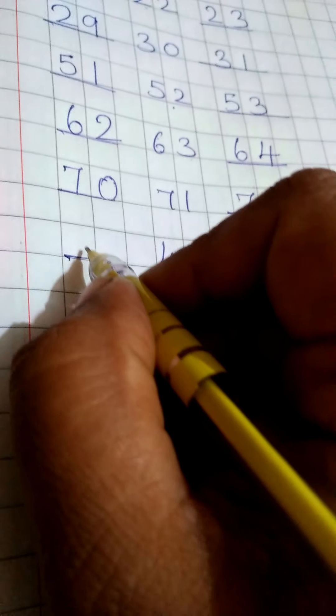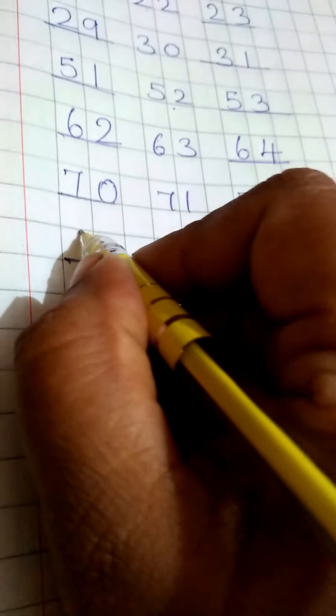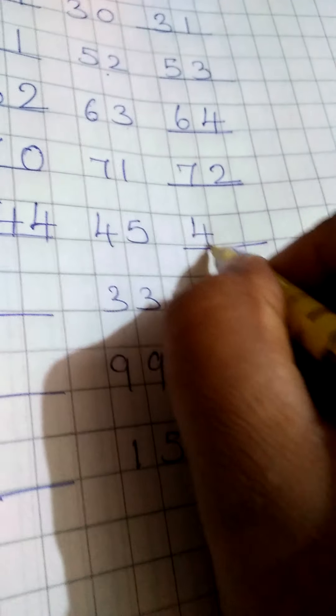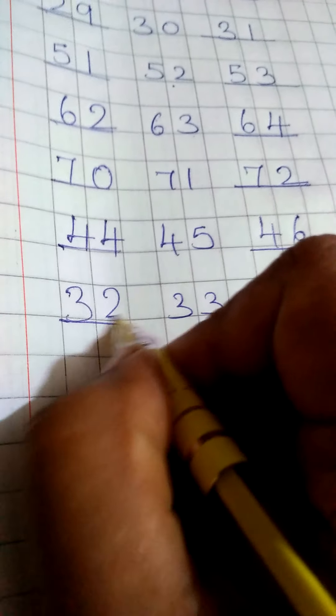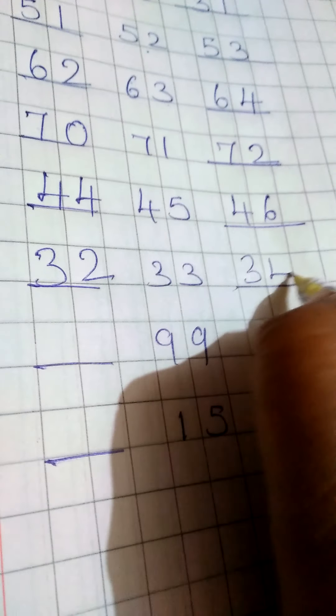45 se pehle kaun sa aata hai. 44, 45 and 46. 33, 33 here 32, 33 and 34.